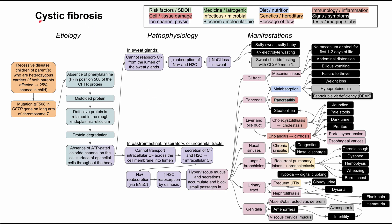This is a mechanism of disease map for cystic fibrosis. I'll be talking about the etiology, the pathophysiology, and the manifestations of this disease. We'll see that cystic fibrosis can manifest in many organ systems throughout the body. Each of these boxes is color-coded according to the legend at the top right, so you can follow along as I talk through the flow chart.